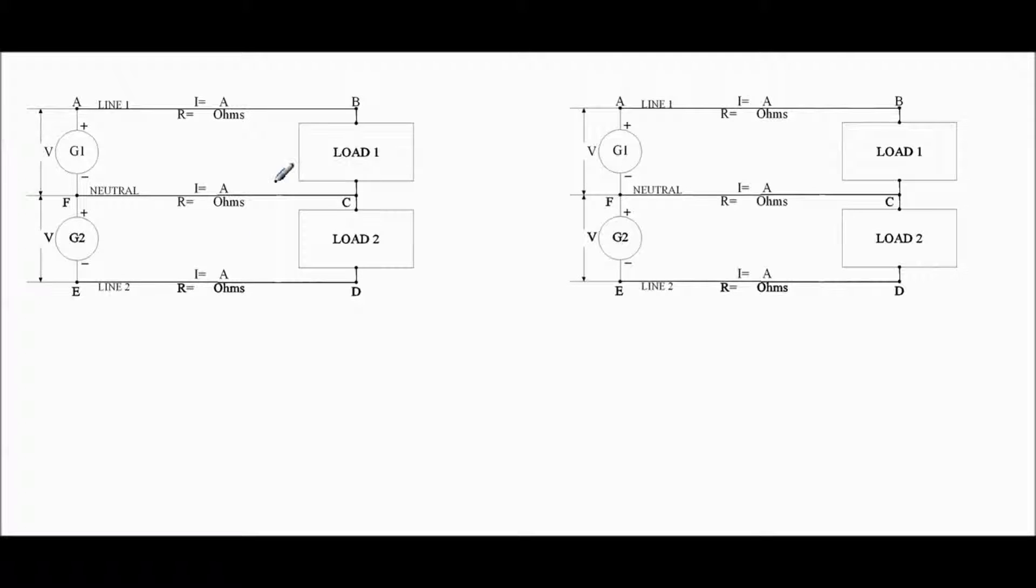All right, here we have a 3-bar circuit. The resistance we know here is 0.5 ohms. They're all the same because they're all the same length. Here's your line 1, neutral line 2. We also know that at each generator is 120 volts. That's the source.